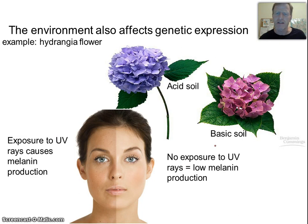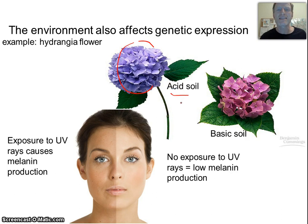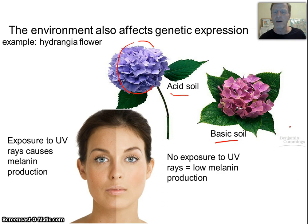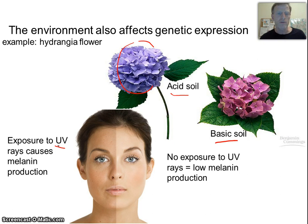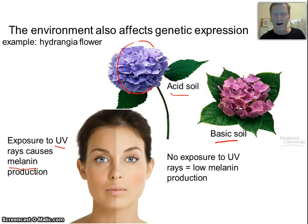Some other things that affect inheritance or expression of genes are environmental factors. Hydrangeas, for example: if you see blue flowers, it means the soil is acidic — the acid soil actually turns on different genes in the flower. Basic soils produce purple flowers. We see this in humans too, because when humans are exposed to UV rays, it causes genes to produce melanin, which makes them darker. Getting tan is an environmental response to UV rays — the more you're in the sun, the darker your pigmentation will be. That's an example of genes responding to the environment and changing a phenotype.